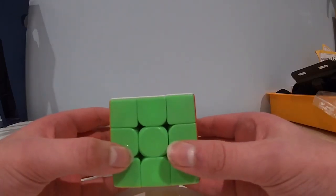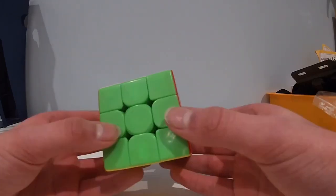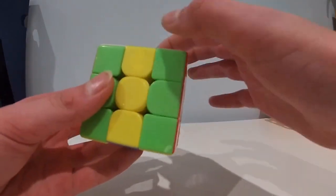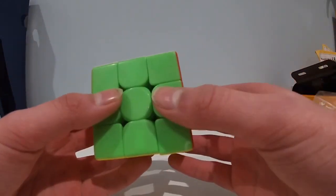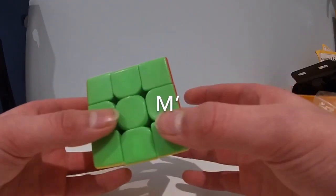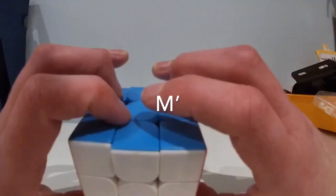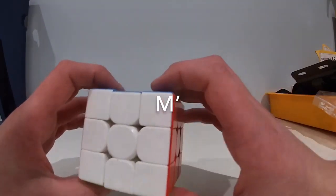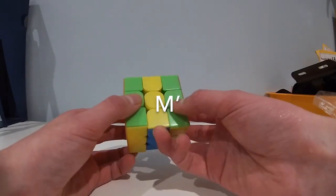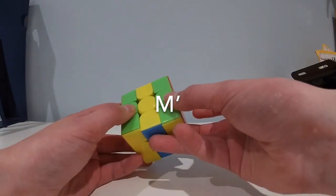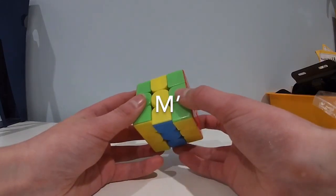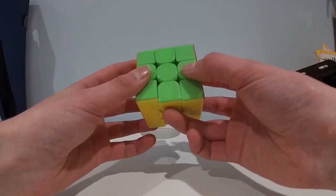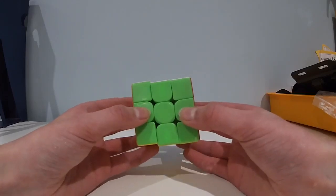Another helpful finger trick that will help you when you get more advanced is the M and M prime moves. This is moving the middle slice without doing a full turn, just doing a flick. For M prime, what you do is place your ring finger on the back of the bottom piece and you push it from there to the bottom of the front piece. This is very helpful in algorithms such as the H perm.